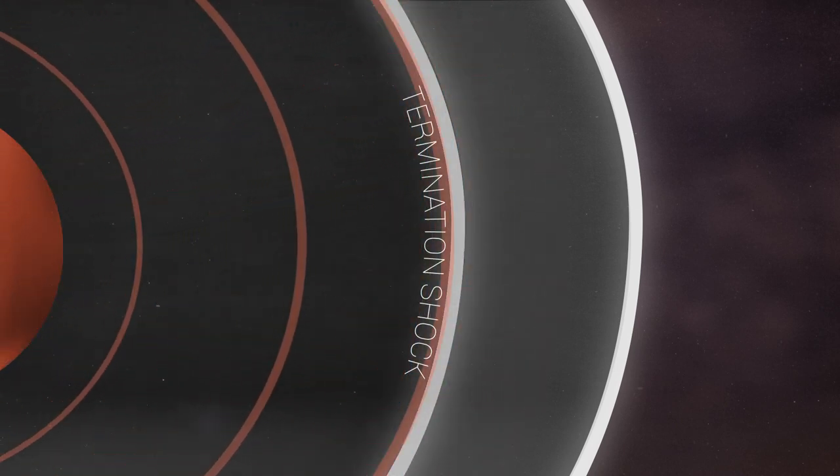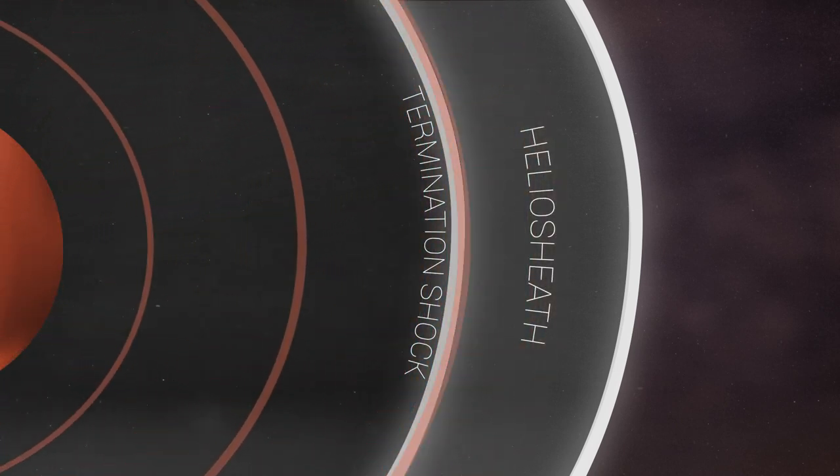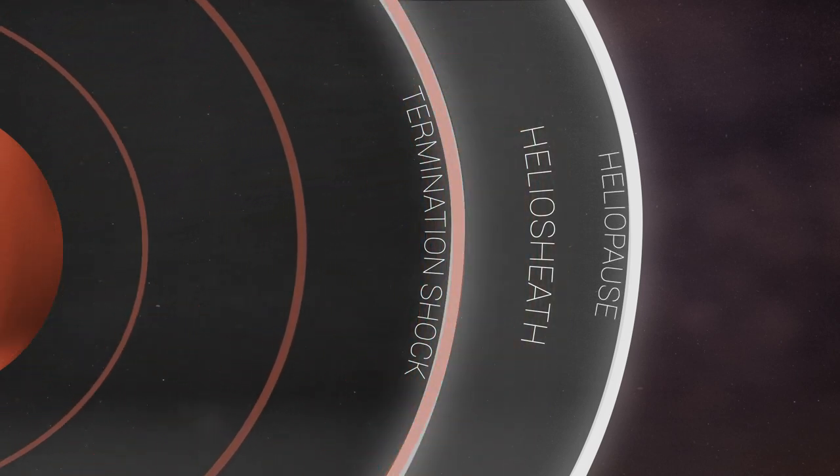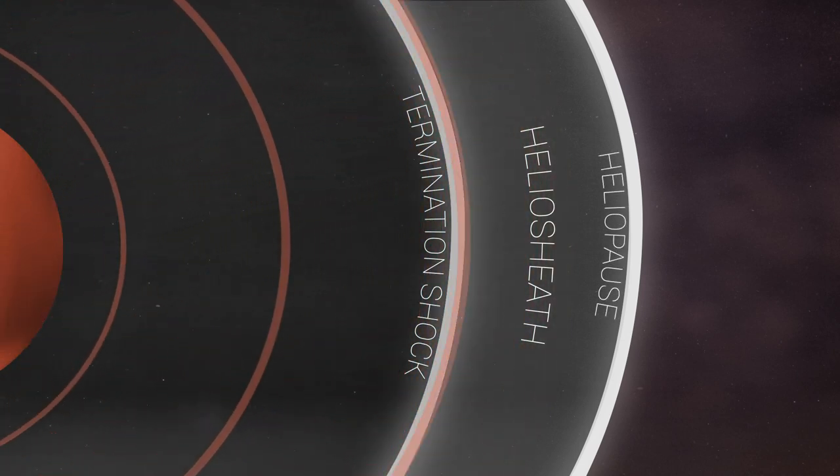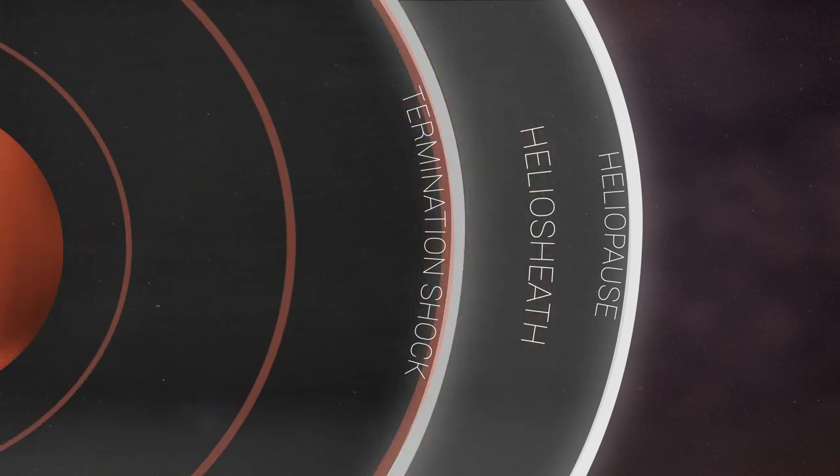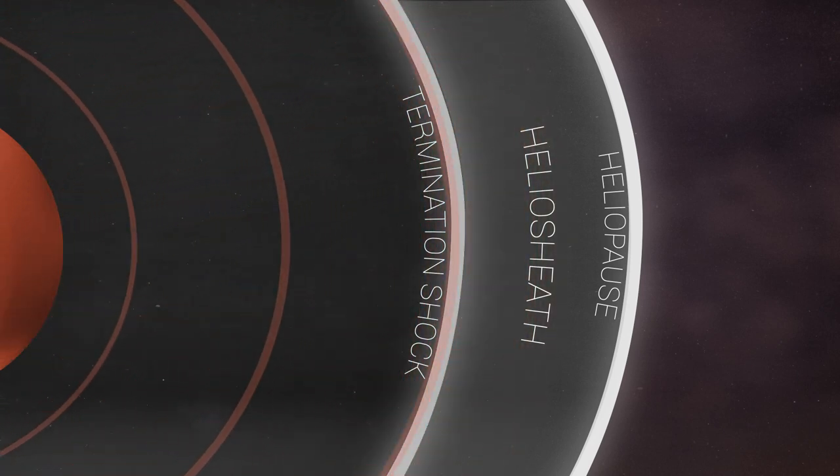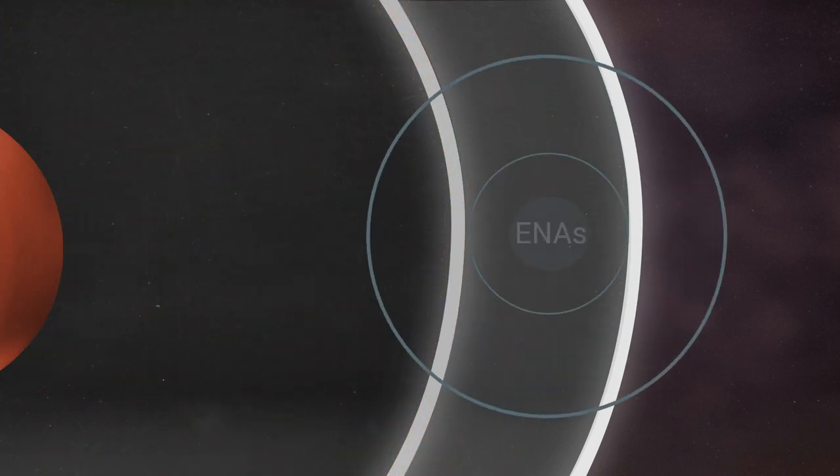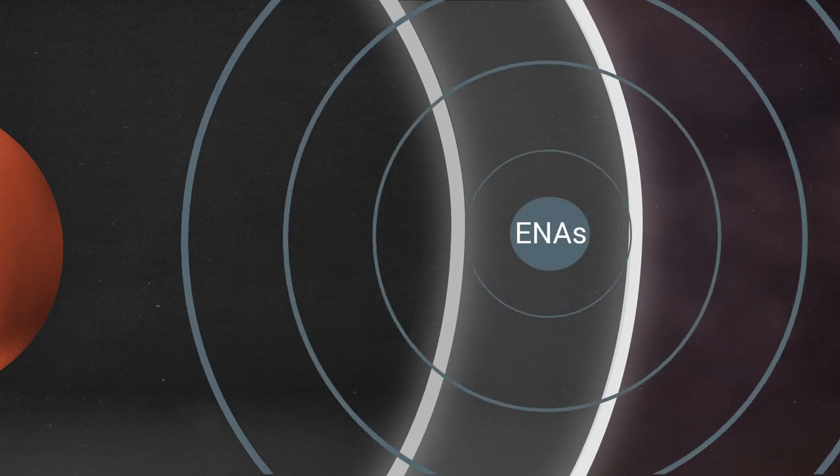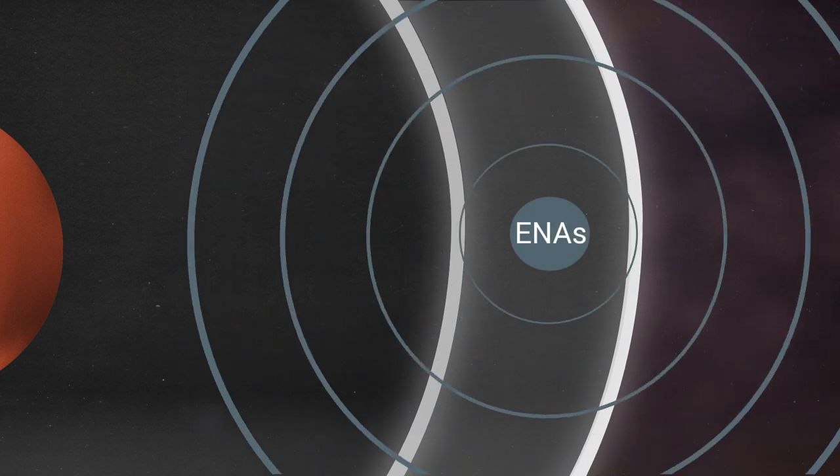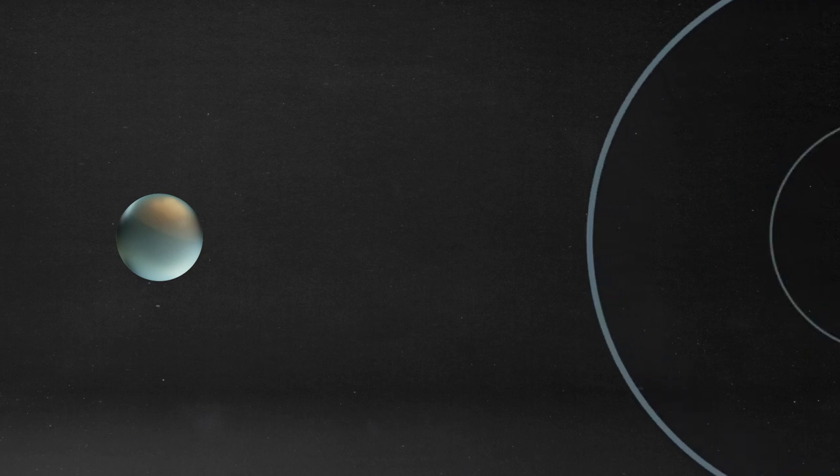First the termination shock, and then it entered the heliosheath that's encased by the heliopause. Solar wind particles spent another year or so in this region. Some collided with interstellar gases in the heliosheath and turned into energetic neutral atoms, or ENAs. ENAs travel in all directions, some even back toward Earth.